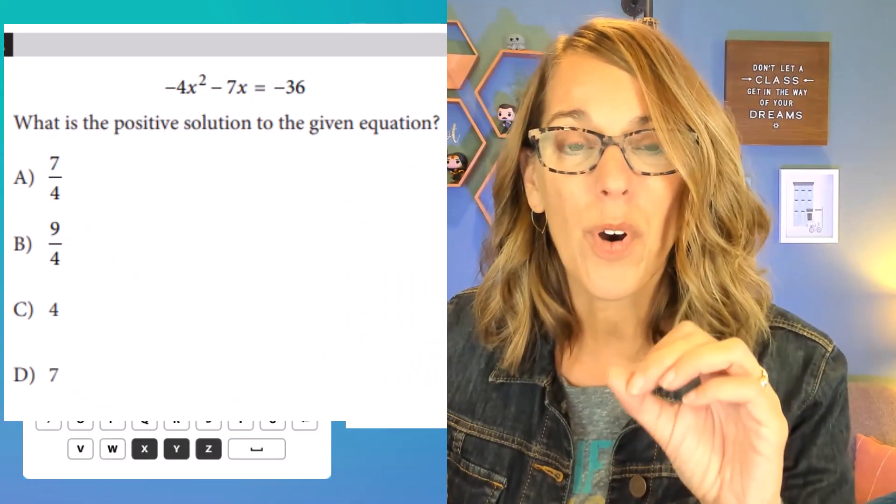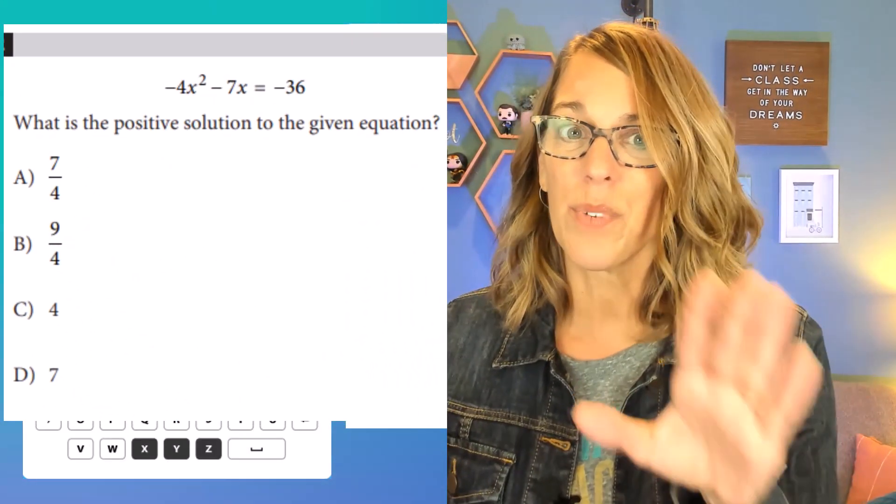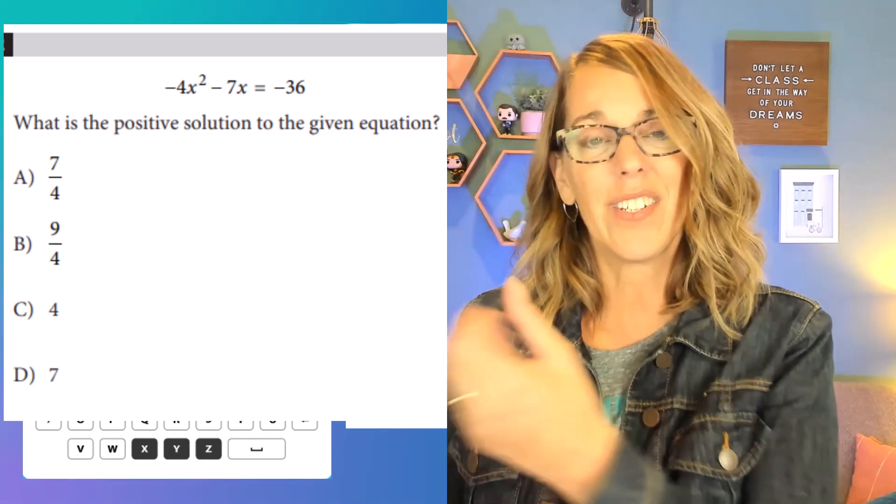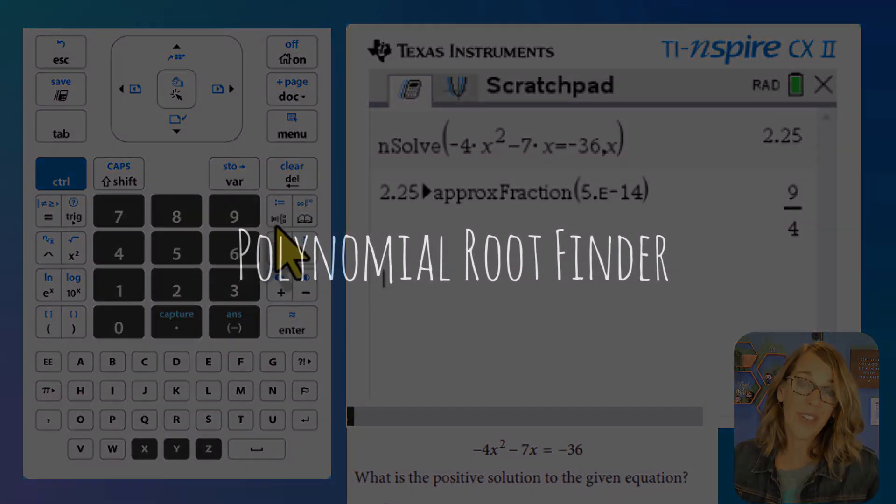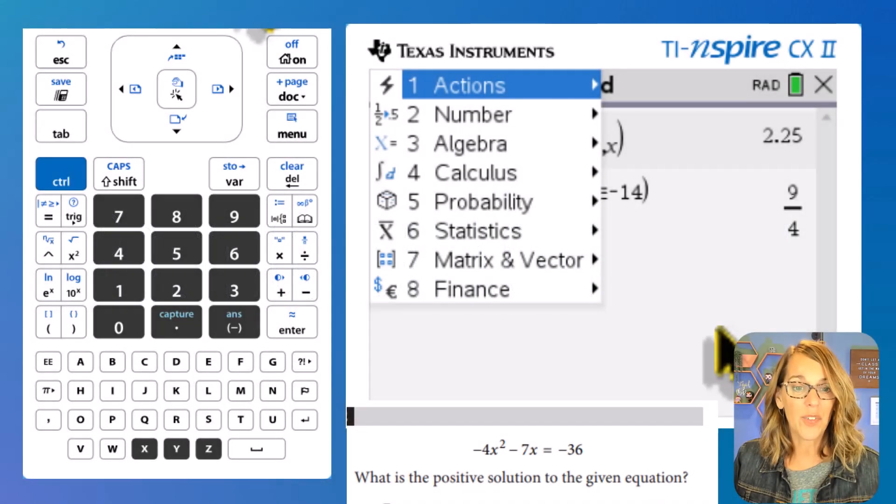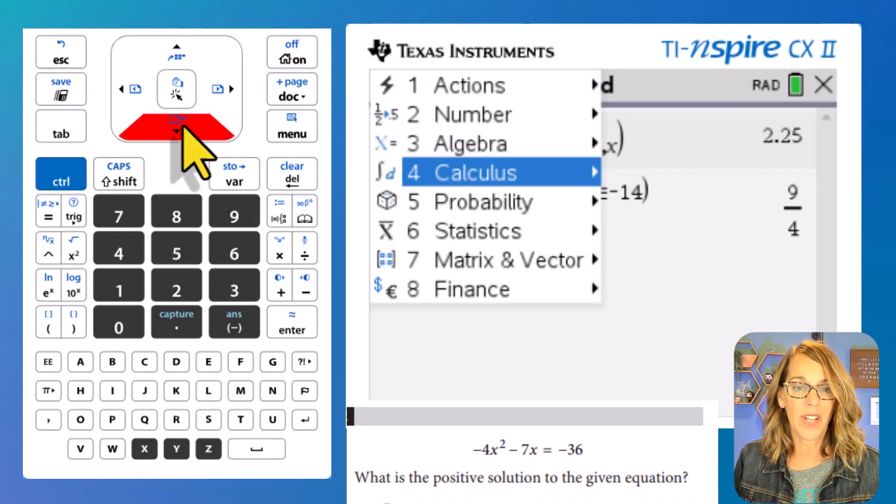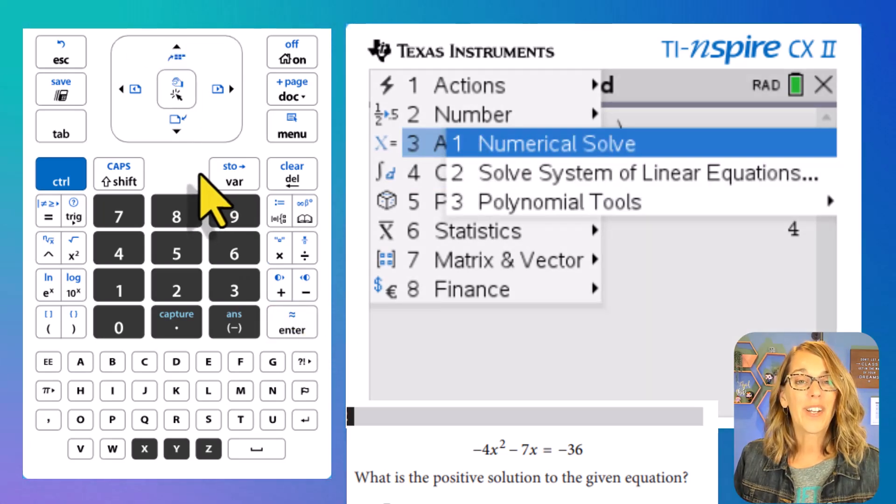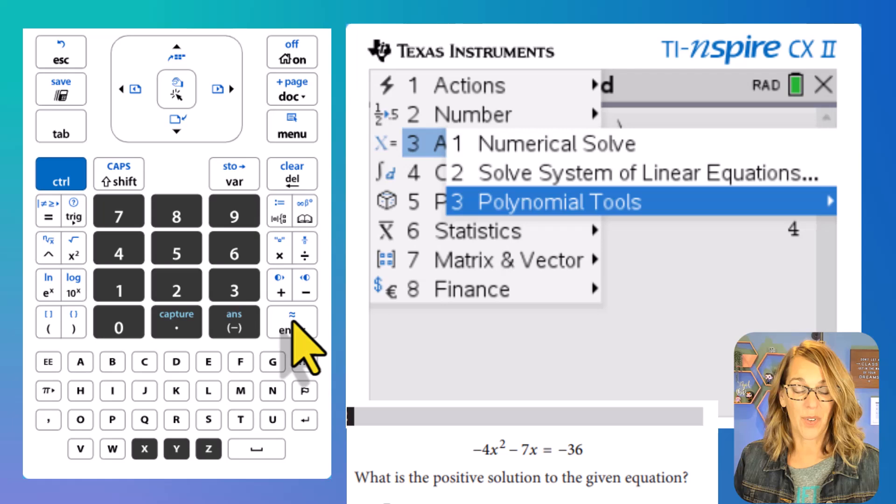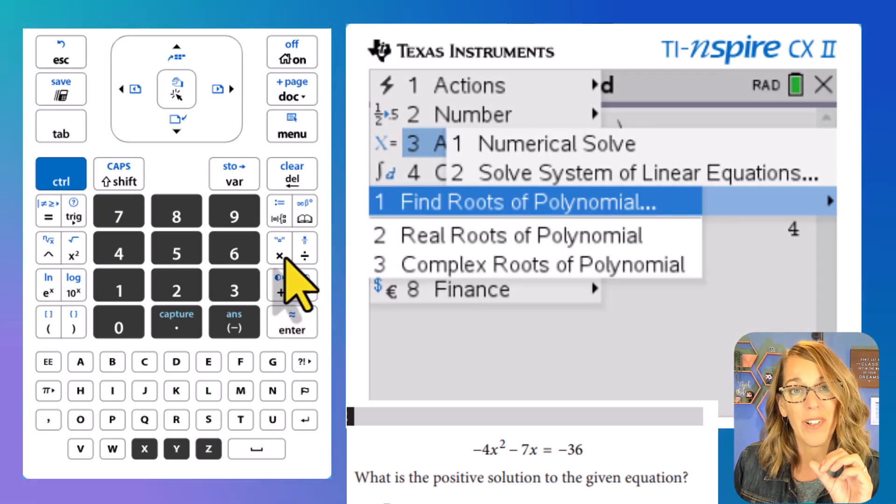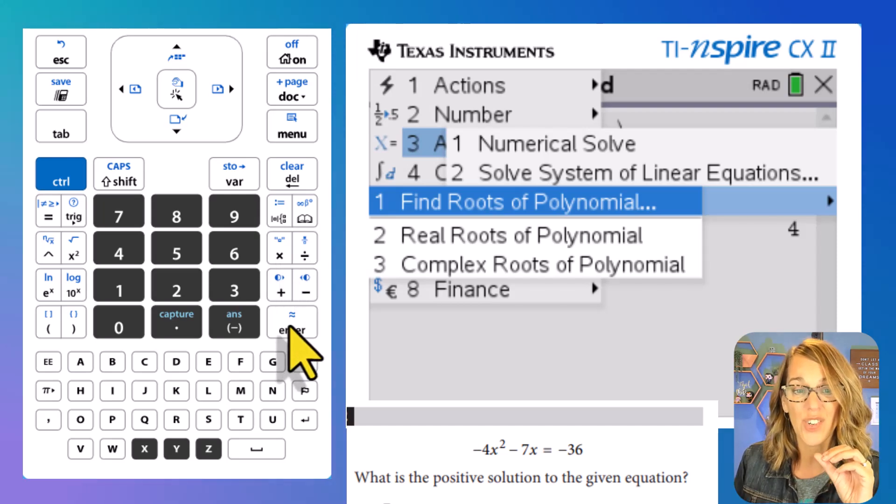But I want to show you how to do this one more way because the second method is really great. And it will give you multiple solutions. In this case, we just wanted the positive. The second way is also an algebra tool. So we want to go back into that menu. Let's go to algebra, which is number three. I'm going to arrow down, but you could type number three. I want algebra and then enter. We're going to choose polynomial tools this time. So three and then enter. We want to find roots of a polynomial. Roots are the same thing as solutions. So let's choose this.